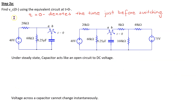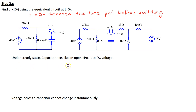The next step is to find Vc(0−). Recall that t equals 0− denotes the time just before switching takes place. Therefore, Vc(0−) is the voltage across the capacitor just before switching takes place. In the given circuit, the switch is at position A before switching takes place. Therefore, this part of the circuit is not connected and this is the circuit of interest. It is given that the switch has been at position A for a very long time. Under steady state, a capacitor acts like an open circuit to DC.